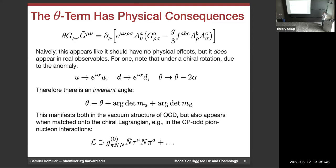That invariant angle is theta-bar: whatever theta-zero is — the parameter in front of G G-tilde — plus the argument of the determinant of the quark mass matrices. Theta-bar manifests in the vacuum structure of QCD. If you match QCD at low energies onto the chiral Lagrangian and work out a phenomenological model of pions and nucleons, you end up with problems — for example, CP-odd pion-nucleon interaction terms in the chiral Lagrangian with coefficients that depend on theta-bar.